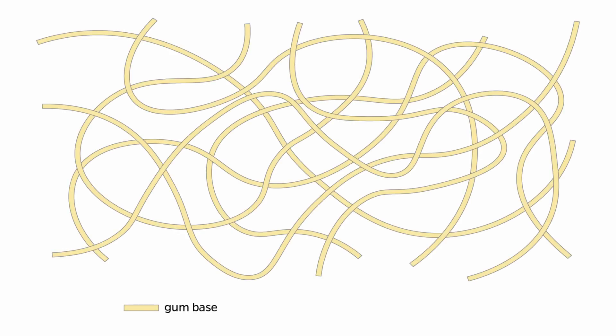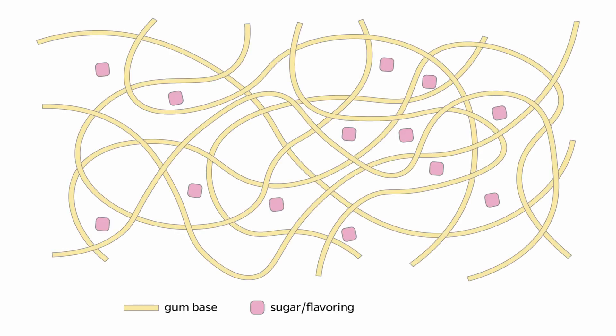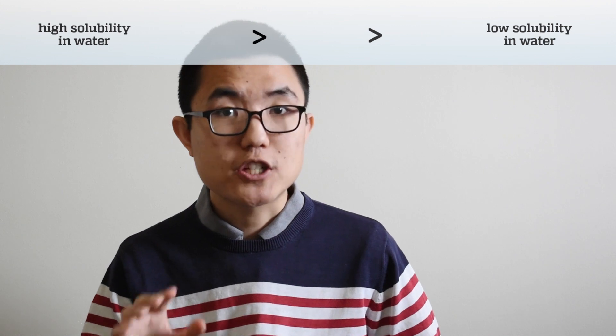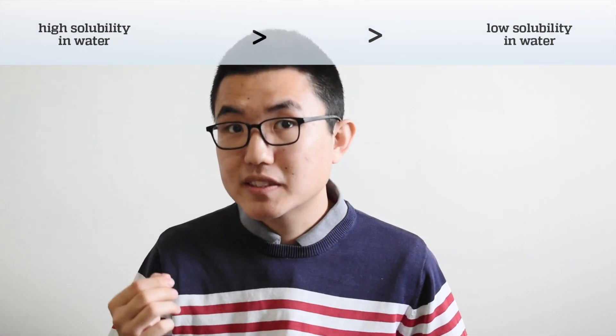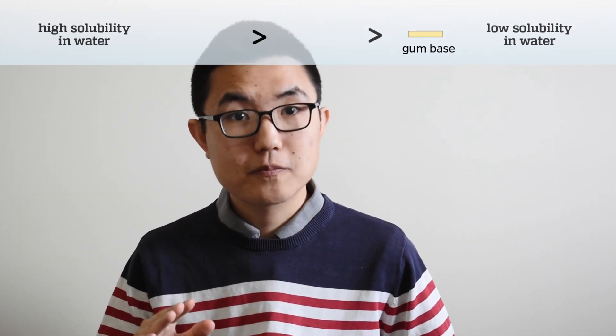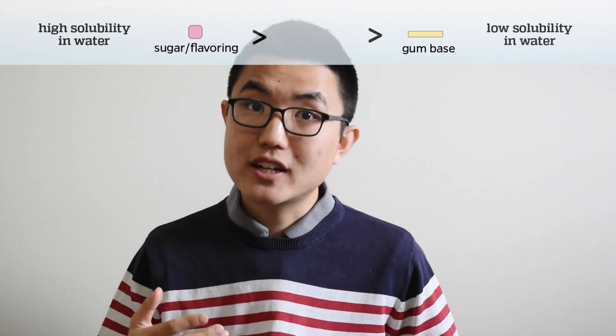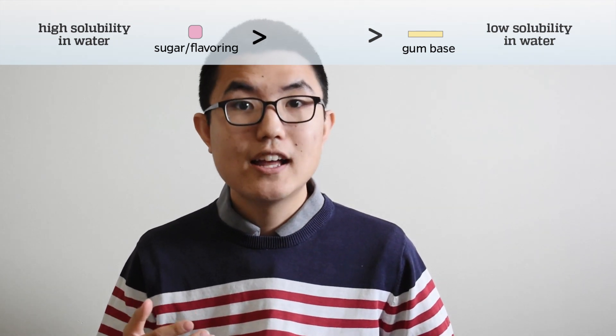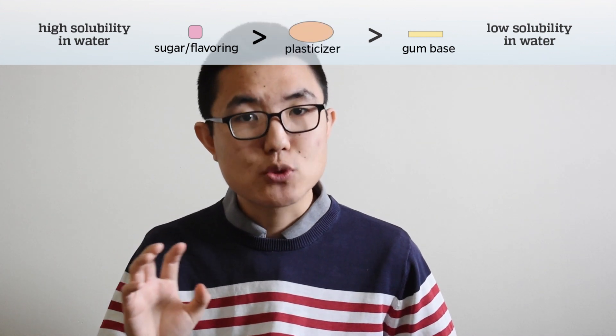Back to chewing gum. We said that chewing gum is made of gum base, together with flavorings such as sugar and fruit extracts, as well as plasticizers to soften the gum. Now let's consider how each of these ingredients contribute to the experience of actually chewing gum. An important property of these ingredients is how well they dissolve in water. The polymers that make up gum base are specifically chosen to be highly insoluble in water, which means that they do not dissolve. In contrast, sugar and flavoring molecules generally have pretty high solubility and they dissolve well. Finally, the plasticizers are typically somewhere in between.